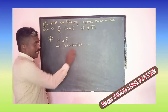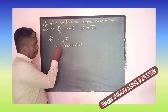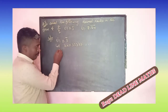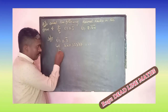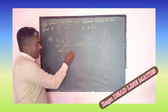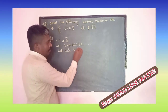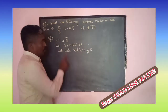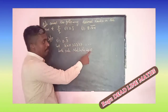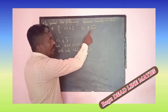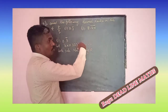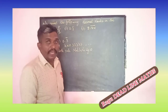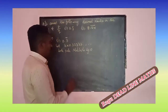Now we will consider x = 0.333... Next, we want to multiply both sides by 10. There is only one digit repeating, so we multiply by 10. If three numbers are repeated, you have to multiply by 1000. If two digits are repeated, you multiply by 100.